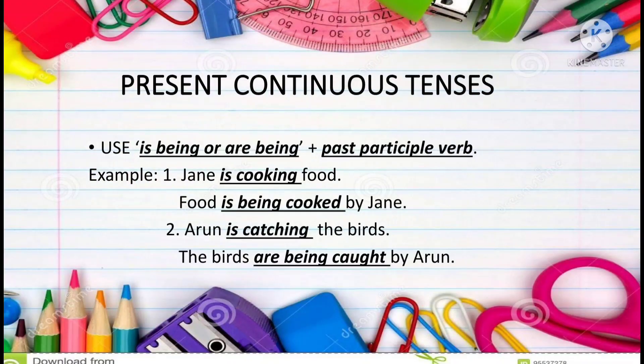For the present continuous tense, use is being or are being and the past participle verb. For example: Jane is cooking food — food is being cooked by Jane. Arun is catching the birds — the birds are being caught by Arun. Note that since we start with food, we use is being cooked, and starting with the birds, we use are being caught.